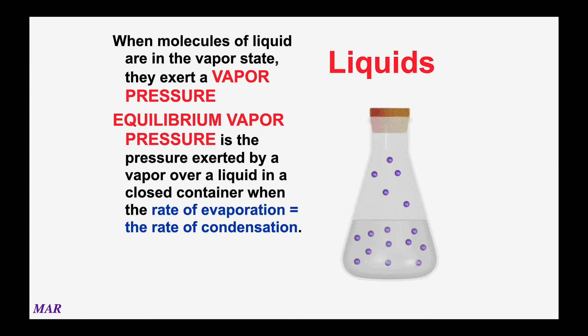This brings up the idea of vapor pressure — the pressure exerted by the small amount of gas above a liquid. Even at lower temperatures there's always a little bit of gas, because some molecules have enough energy to break into the gas phase. As you increase the temperature, more and more molecules become gas, and since pressure is a direct result of gas, you have higher vapor pressure. All liquids have at least a little bit of gas above them. You can have an equilibrium vapor pressure if you put a lid or stopper on the container.